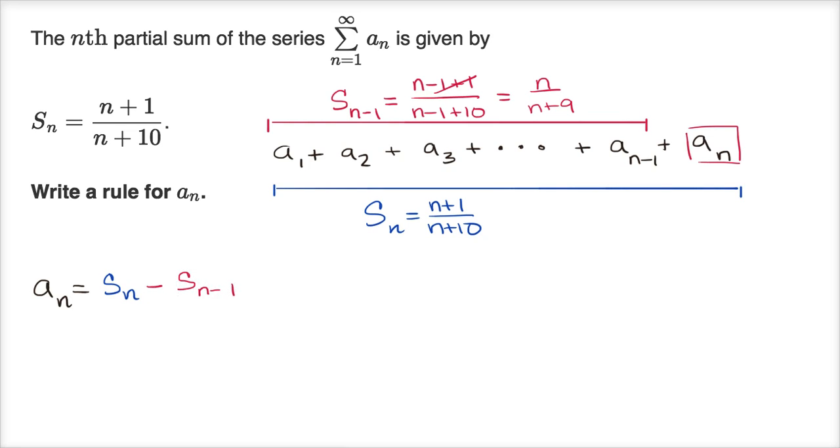Or we could write that is equal to this stuff. So this is (n+1)/(n+10) minus n/(n+9). And this by itself is a rule for a_n, but we could combine these terms, add these two fractions together. And this is actually going to be the case for n greater than one.